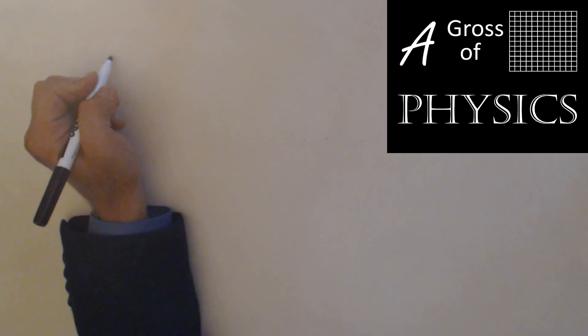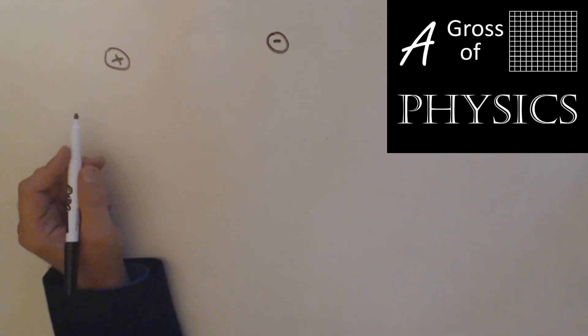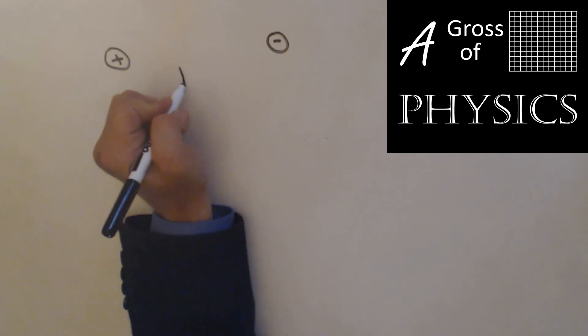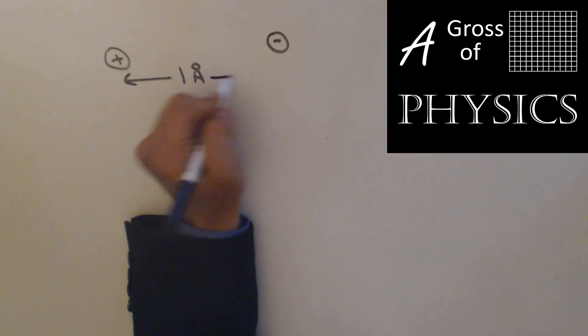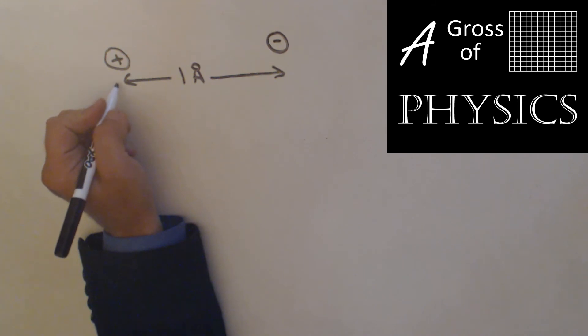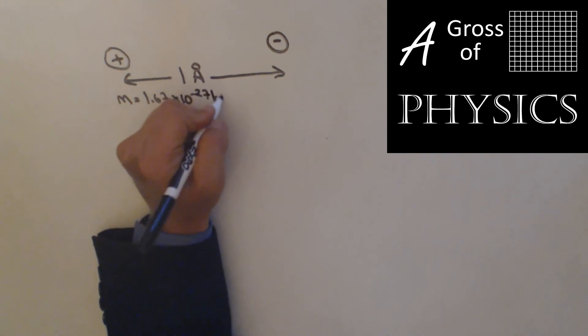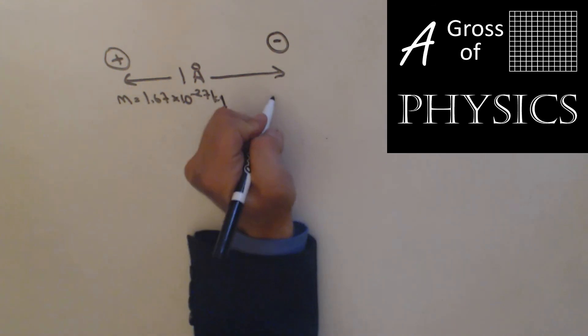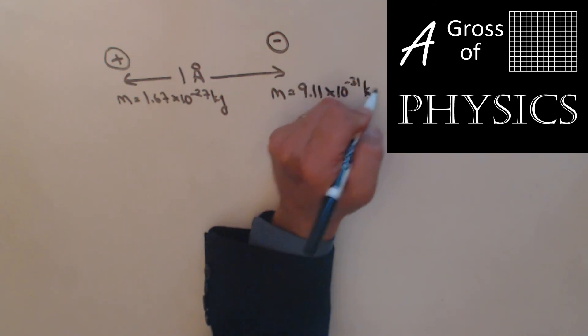For our next problem, let's look at a hydrogen atom. We have a proton in the nucleus and we have an electron out on the outer edge of the atom itself. Let's just use 1 angstrom as our distance, because that's a standard atomic radii. In this case, the proton is going to have a mass of 1.67 times 10 to the negative 27 kilograms. It's quite small. Mass of the electron, however, is even smaller: 9.11 times 10 to the negative 31 kilograms.